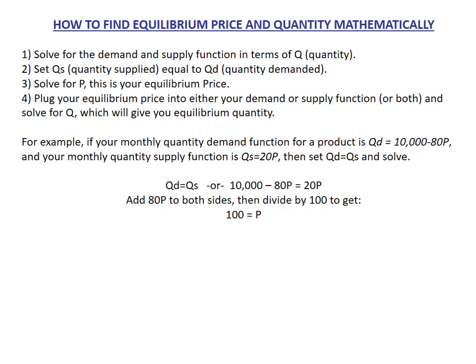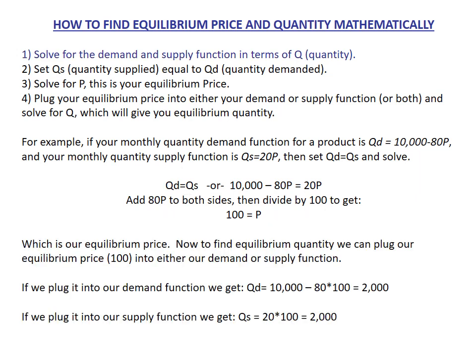Just to recap: all you have to do is set quantity demanded equal to quantity supplied. You do that, add 80P to both sides, divide by 100, and you get P equals 100. Once you find your P, you plug it into your demand function and you get 2,000, or you plug it into your supply function and you also get 2,000.